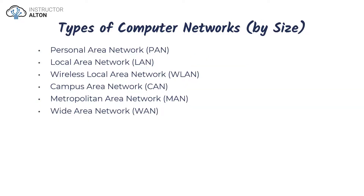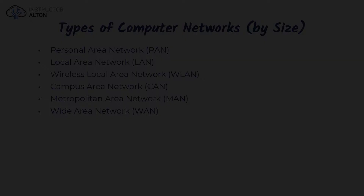To summarize, we covered multiple types of computer networks: the personal area network (smallest), the local area network, the wireless local area network, and then the wider types — campus area network, metropolitan area network, and wide area network. If you have any questions please let me know, thanks for watching.